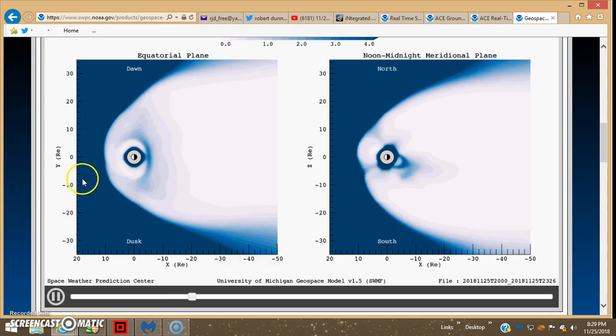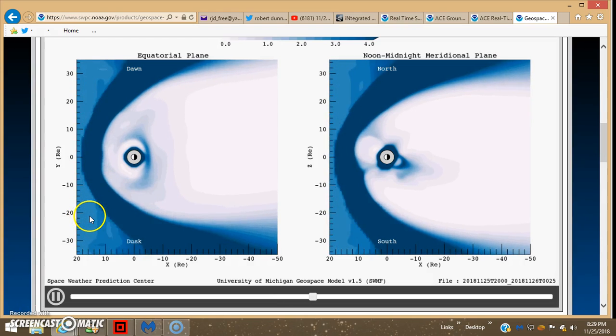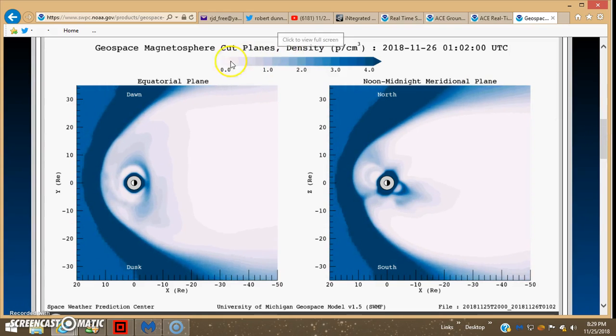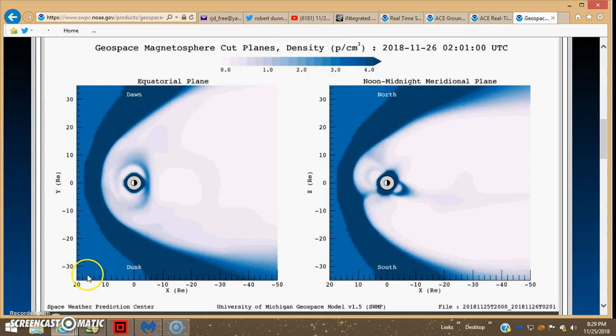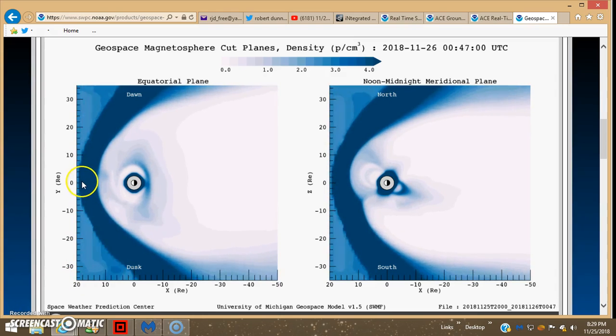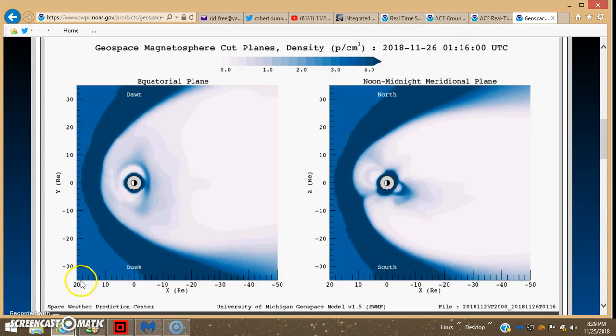But look how far out the bow shock is now and you can see these different waves of energy coming from that big planet. These are density waves, density cut planes magnetosphere. And it was out to about 16 this morning, now it's out to 18. I'm not sure it can go out any further, it looks like it's running up against something there. They don't have it calibrated beyond 20 and it's getting close to 20. Look, definitely out to 19 earth radii and the normal is 10.